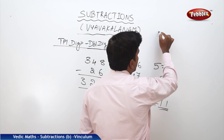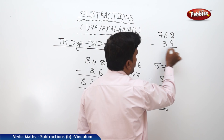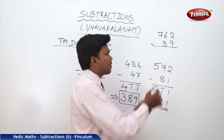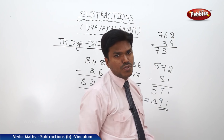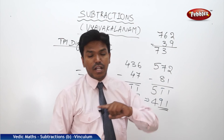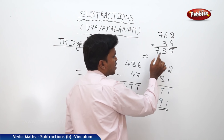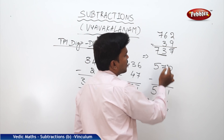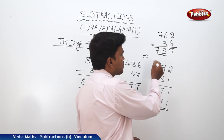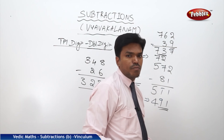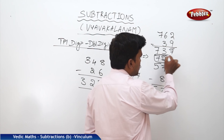Example: 762 minus 39. Drop 7. 6 minus 3 equals 3 directly. 2 minus 9 is not possible, so reverse: 9 minus 2 equals 7 bar. We have 73, 7 bar. Reduce 73 by 1 to get 72. Complement of 7 is 3. Answer: 723.